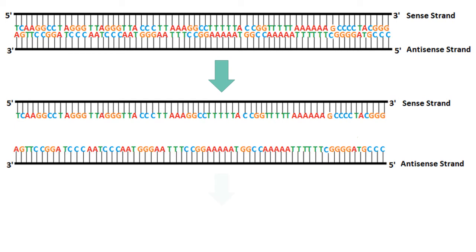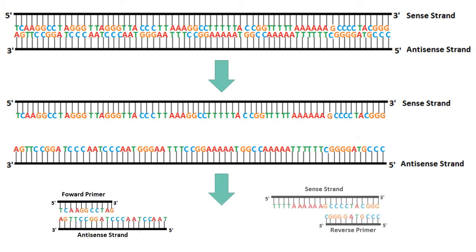After the template DNA strands have been separated, the temperature is lowered to approximately 60 degrees Celsius to allow the primers to anneal or base pair with the single-stranded DNA. Each primer will anneal to one of the separated DNA strands. The forward primer will anneal to the antisense strand while the reverse primer will anneal to the sense strand.